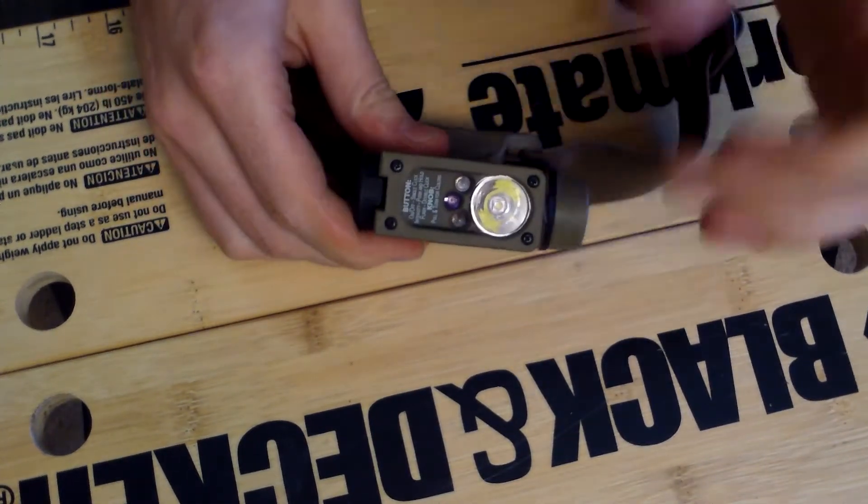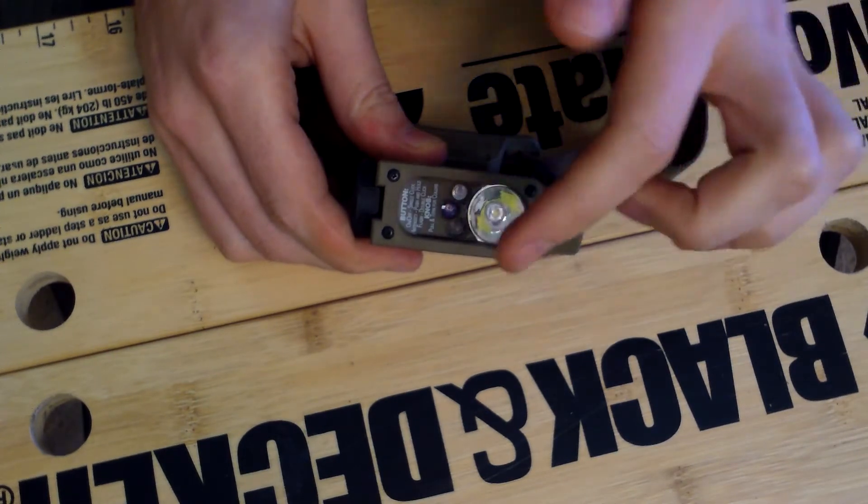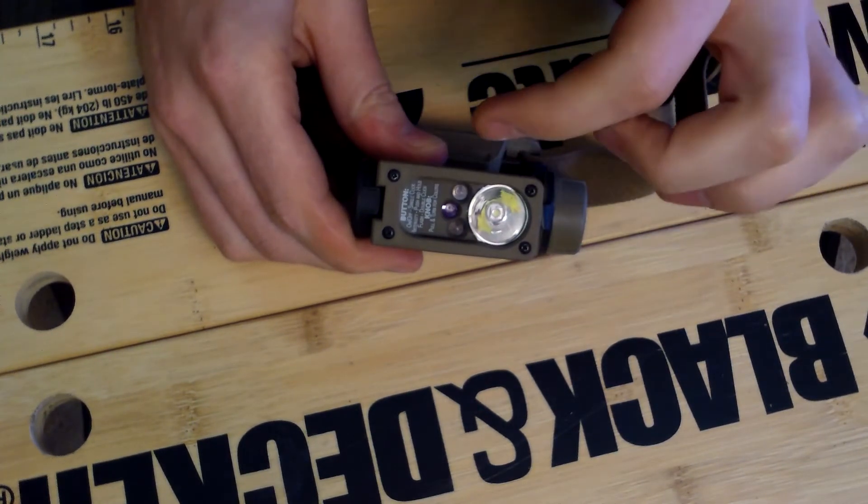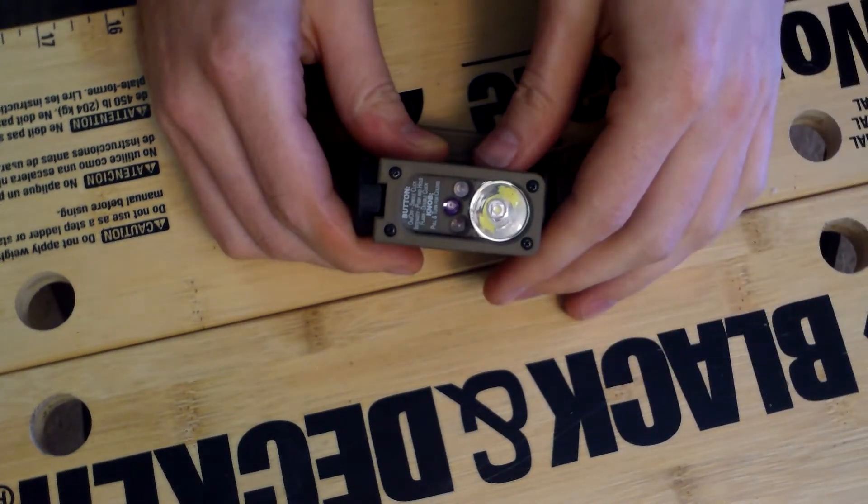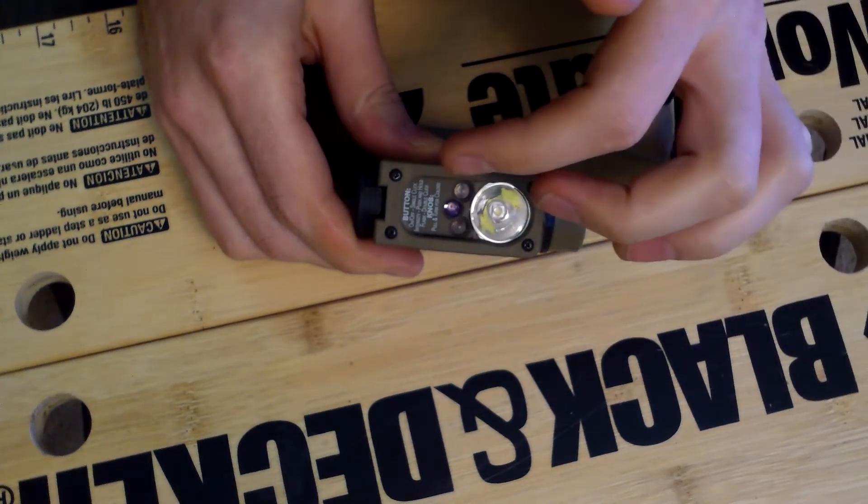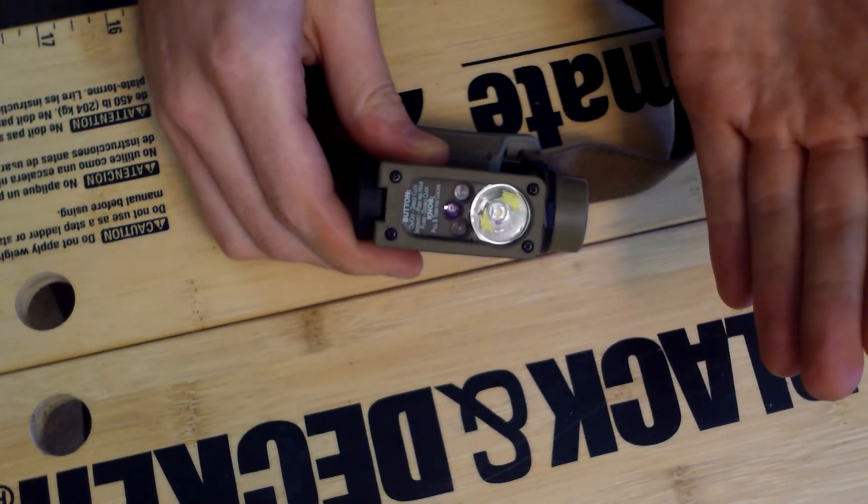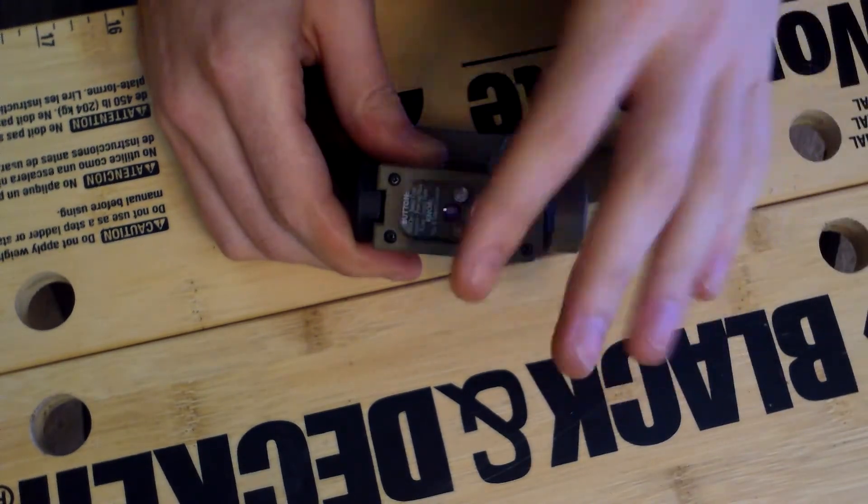Second negative is that as of right now, this is the only configuration of the Sidewinder Compact 2: the white light, red, infrared, and blue. If you don't use infrared, well that might be a wasted feature for you. Maybe down the road they will replace the infrared and give you an option for a green LED like they do in the Sidewinder Compact, but as of right now this is it.